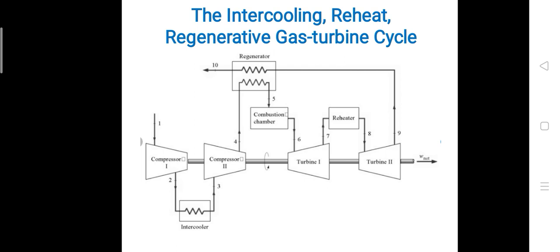In the high pressure compressor, the pressure of the air increases further, and the temperature also increases. The compressed air then goes directly to the regenerator. On the other side of the regenerator, the exhaust gases from the low pressure turbine also enter the regenerator.